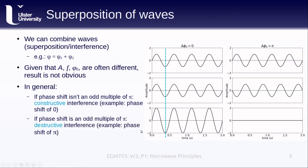If, however, the phase shift is an odd multiple of pi, we have something called destructive interference. The example here shows what this looks like for a phase shift of pi. The troughs of the first wave align with the peaks of the second wave, with the result being that the two waves completely cancel each other out. The combined wave has an amplitude of 0.